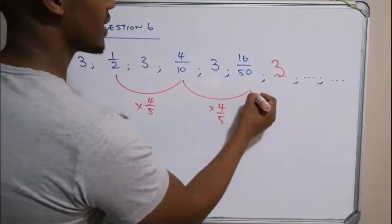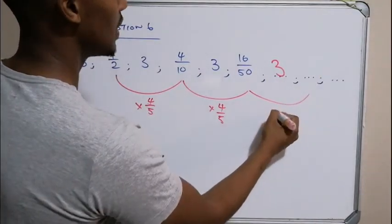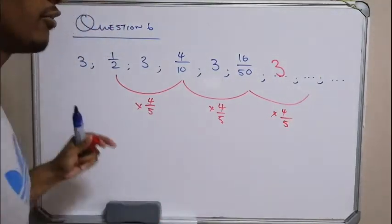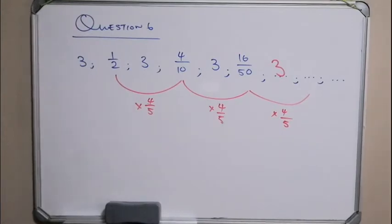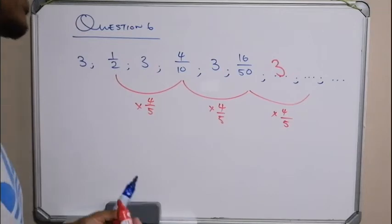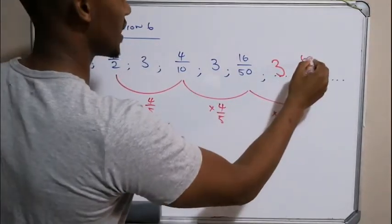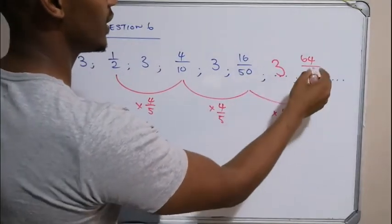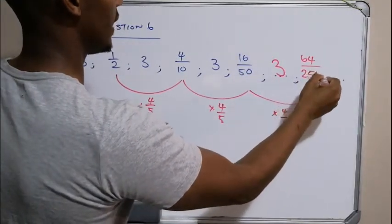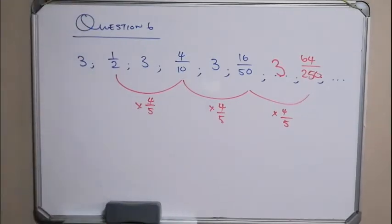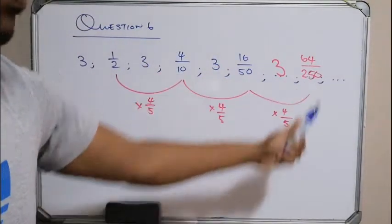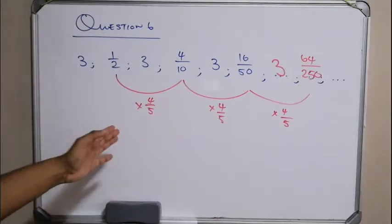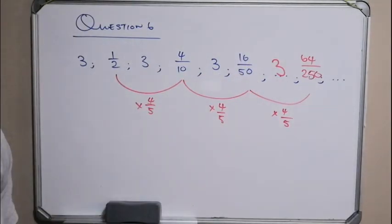I can then apply the same logic to get the next term: multiply the 16 by 4 and multiply the 50 by 5. 16 multiplied by 4 is 64, and 50 times 5 is 250. These fractions can obviously be simplified, but the reason they wrote it like this is so that it's much easier for you to figure out what the pattern is.